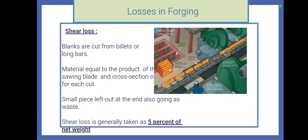First one, shear loss. Blanks are cut from billets or long bars. That means the blank required for forging a component is cut from billets or long bars by means of a sawing machine.